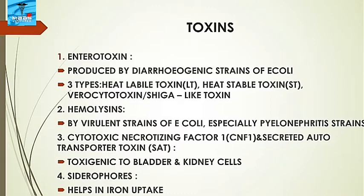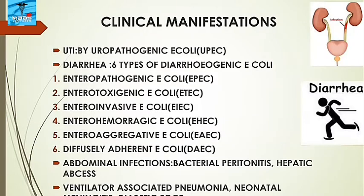Regarding toxins: enterotoxin is produced by diarrhea-causing strains of E. coli — three types: heat-labile toxin, heat-stable toxin, and verocytotoxin or Shiga-like toxin. Hemolysins are present in virulent strains of E. coli, especially pyelonephritic strains. The third toxin is cytotoxic necrotizing factor 1 and secreted autotransporter toxin, which is toxic to bladder and kidney cells. The fourth is siderophores, which help in iron uptake.